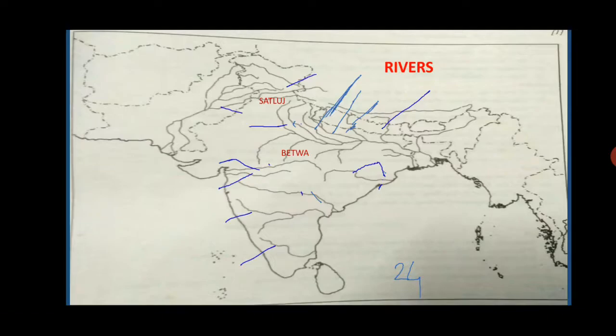Now, rivers. The first topic is rivers, and rivers are very important. All the black color lines shown here are rivers. You can see Sutlej and Beas are given already, and the blue color arrows are indicating towards the river. There are a total of 24 rivers which you have to mark on the map.